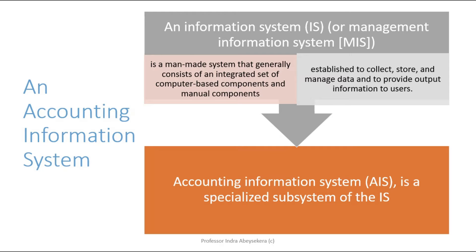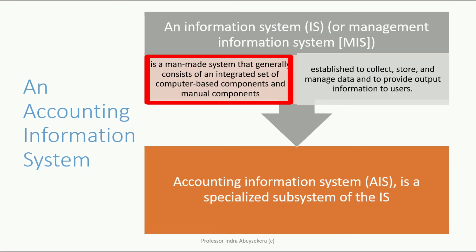If you look at an information system or management information system, it's a man-made system and generally consists of an integrated set of computer-based components and manual components, just like in a digital ecosystem. The four components we looked at are hardware, software, the network, and the content.